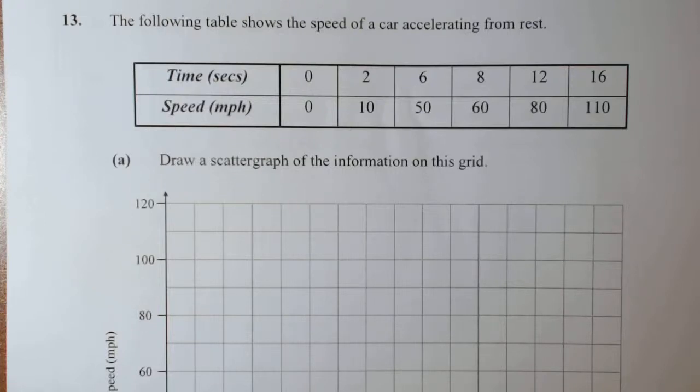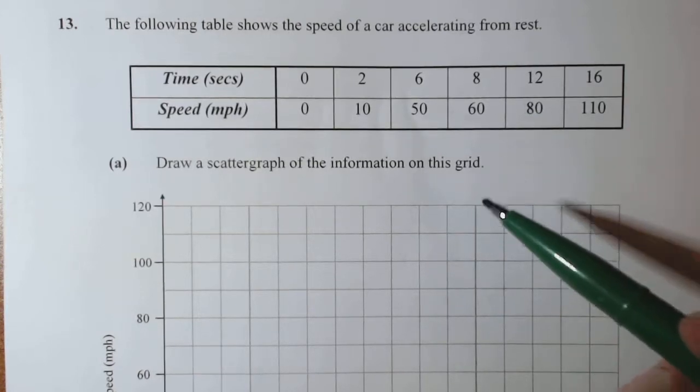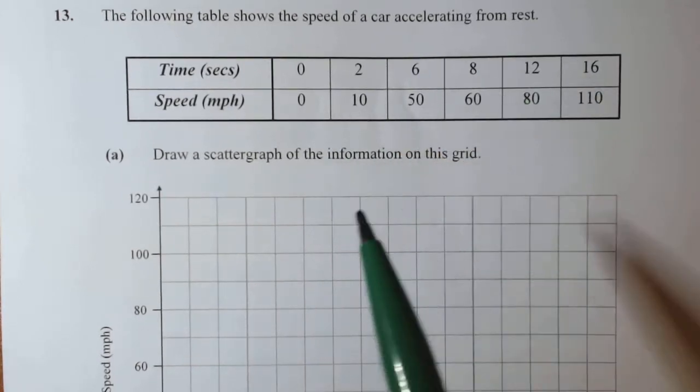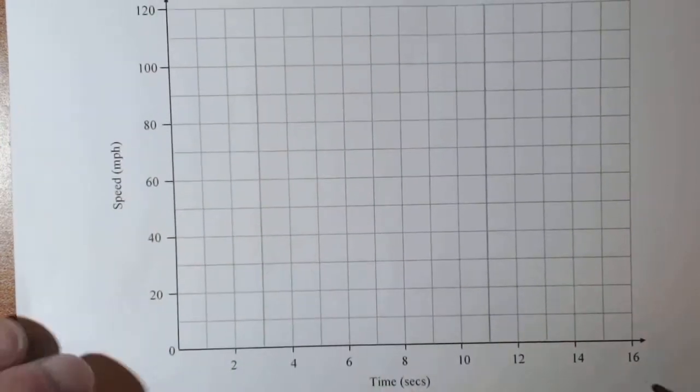Hey, and we'll do another one. So here's one that's to do with a car accelerating from rest - the speed of the car. So what we've had: time, speed, and then it'll tell you what axis each are on.